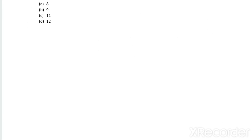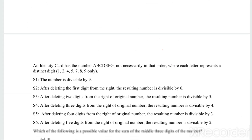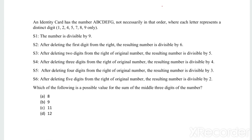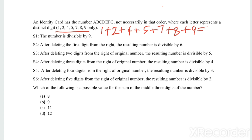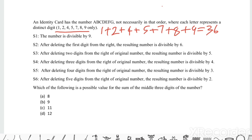The number is divisible by 9. The divisibility test for 9 is that the sum of the digits is divisible by 9. The sum of the seven digits equals 1 + 2 + 4 + 5 + 7 + 8 + 9 = 36. Since 36 is divisible by 9, the number is divisible by 9 — which is already given.